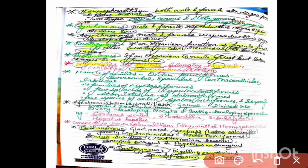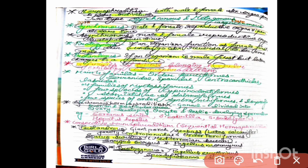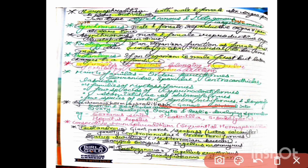About 13 families of teleosts belonging to 5 orders exhibit hermaphroditism. The main order is Perciformes, which includes 4 families: Serranidae, Sparidae, Centridae, and Labridae. A few species of Cyprinodontiformes and Stomiatidae of Salmoniformes, as well as a few species of order Synbranchiformes, also exhibit hermaphroditism.